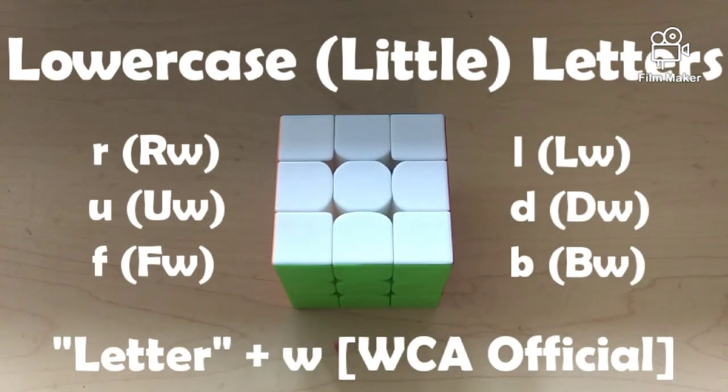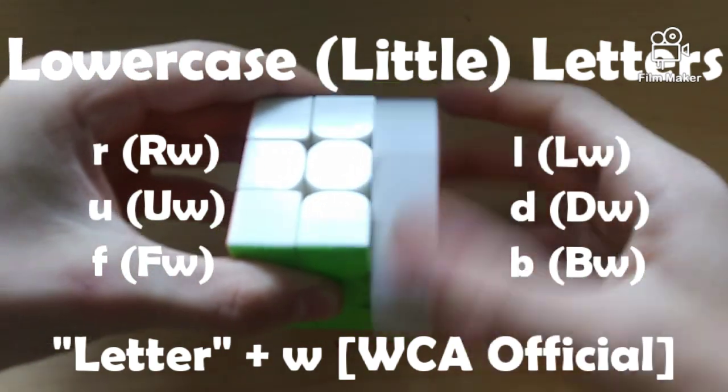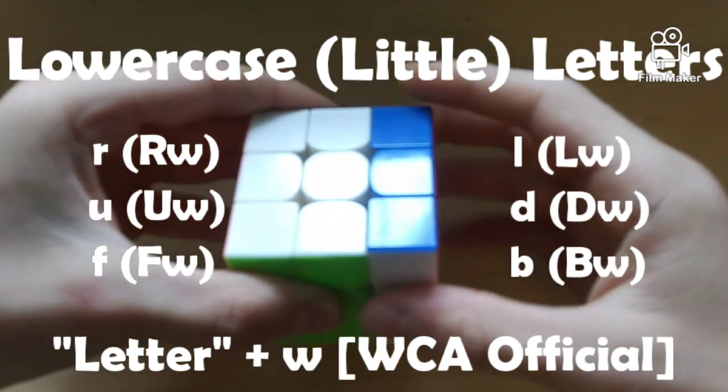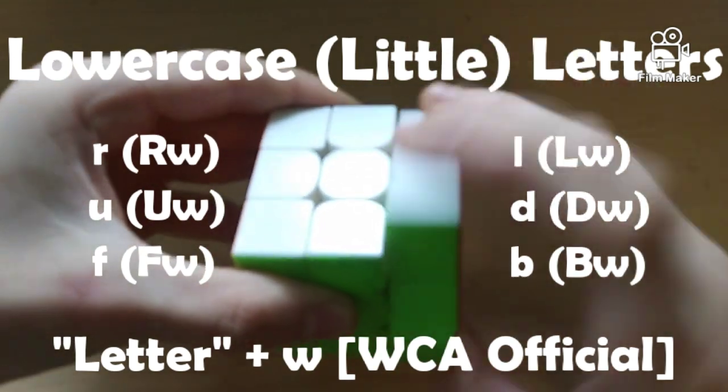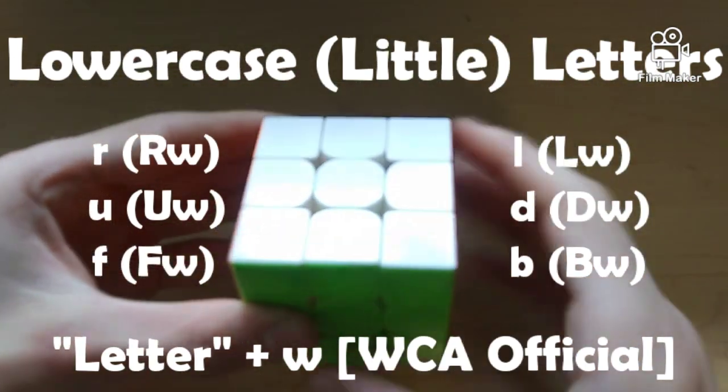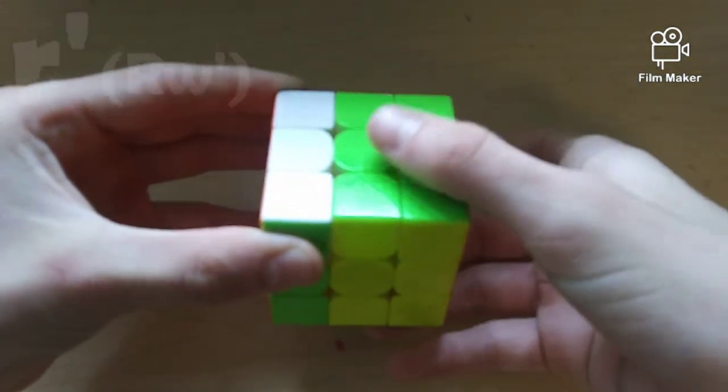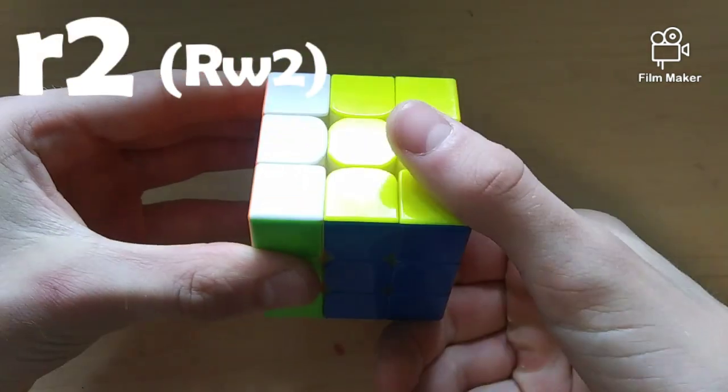We will now move on to the little or lowercase letters. Little letter notation can be executed as following. You will move the letter given the same as its uppercase letter, the same way. However, instead of just moving a single layer, you are also going to be moving it with the middle layer. So, little r, will be that. Little r' and little r2.